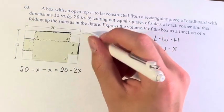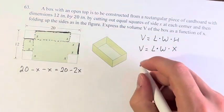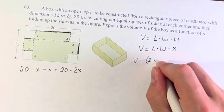It's the whole 20 minus the 2x part that you cut out that leaves you with this. So V is equal to 20 minus 2x.